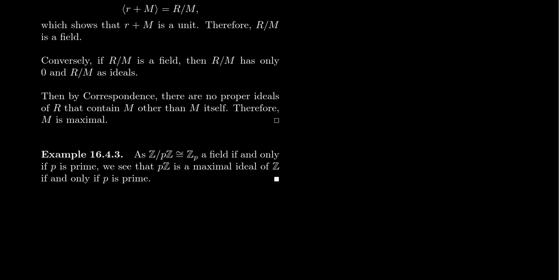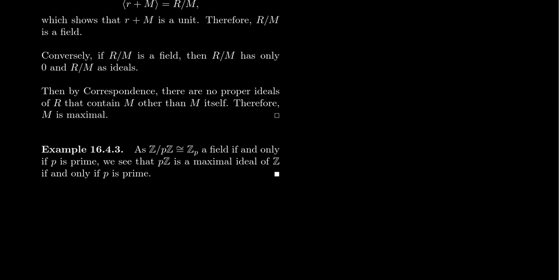Let's consider a short example before we end this video on maximal ideals. If you take the ring of integers, which is a commutative ring with unity, if you mod out by the ideal PZ—in the ring of integers, every ideal is a principal ideal and has the form P times Z—this will be isomorphic to the finite ring Z mod P, and this is going to be a field if and only if P is a prime number. That's something we've studied before.